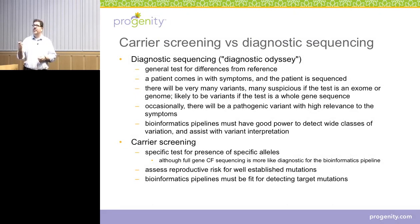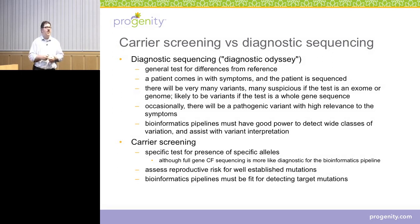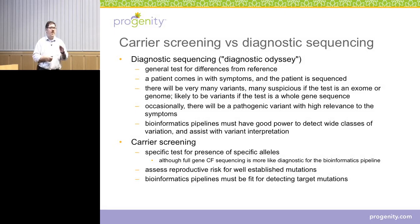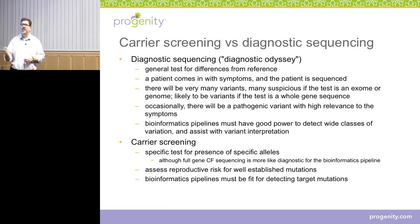What we're doing is very different — vastly more directed. We're doing carrier screening, which means we specifically test for the presence of specific alleles. Although in some cases this might be more like the diagnostic odyssey, such as full gene cystic fibrosis sequencing, that's not typically indicated for most carrier screening applications. The idea is that we're trying to assess reproductive risk for well-established mutations. These are diseases that are typically recessive, with fairly high prevalence, and where there are mutations very well understood to be associated with the disease. Your bioinformatics pipeline will be different — rather than finding every single thing that might be in your patient, you just have to be very good at detecting very specific things.